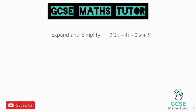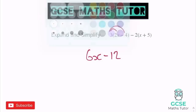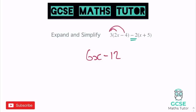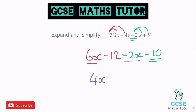Expand and simplify. We've got a minus 2 in the middle, so we need to be careful. Times the first bracket by 3: 3 times 2x gives 6x, and 3 times negative 4 gives negative 12. For the second bracket with negative 2 at the front: negative 2 times x is negative 2x, and negative 2 times positive 5 gives negative 10. Be very careful with that negative 10. Collecting together: 6x minus 2x leaves 4x, and negative 12 minus 10 is negative 22. So the answer is 4x minus 22.